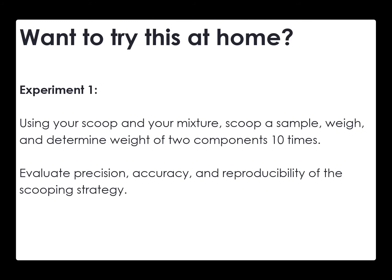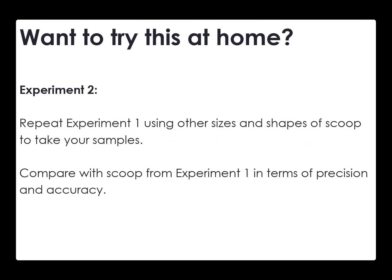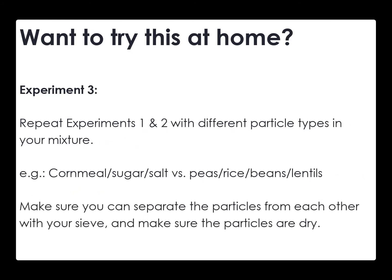With your data, you can work out how many scoops you would need to measure individually to get the precision in your estimation of the particle A versus particle B ratio below 5%, below 1%, or below 0.1% RSD. Note that with this experiment we are not actually worried about the accuracy of this ratio — here we're just looking at the precision. You can also compare different types of scoops: different sizes, profiles, bowl depth, and shapes. A third thing you can try is making different mixtures of particles — for example, using sugar, salt, or cornmeal as particle A, and lentils, dry peas, rice, or beans as particle B. The only thing you need to worry about is whether you can separate the two particles with your sieve.